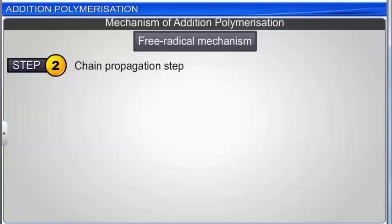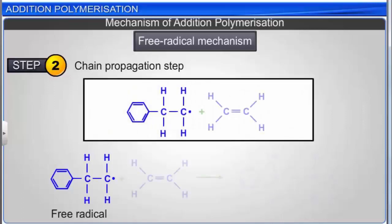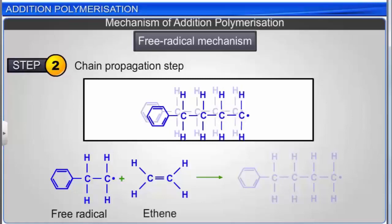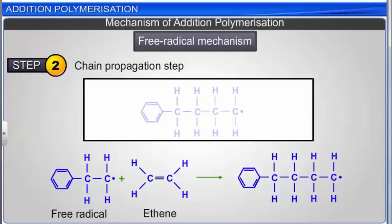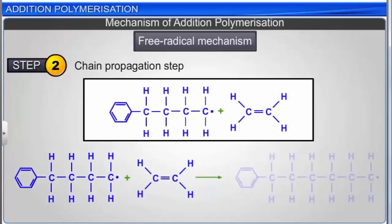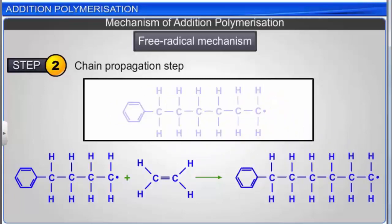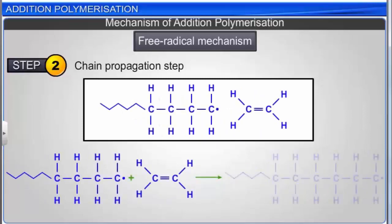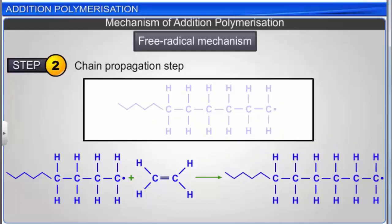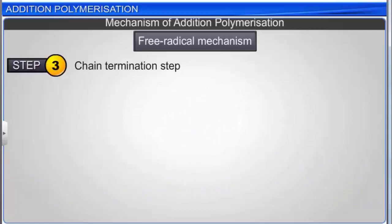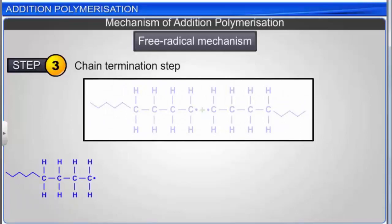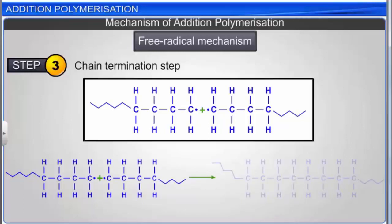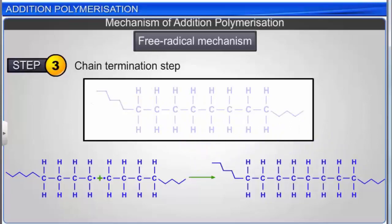The next step is chain propagation. The radical generated at the end of the chain initiation step reacts with another monomer, ethene, to form a new and bigger radical. This radical attacks another molecule of ethene to form a still bigger radical. The series of reactions continues, and as a result the alkyl chain grows longer and longer. The polymerized product forms in the last step—the chain termination step—when the product radical combines with another free radical chain. The formation of polythene is shown here.